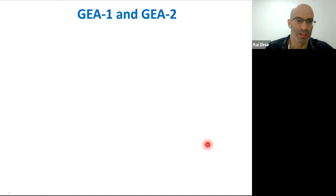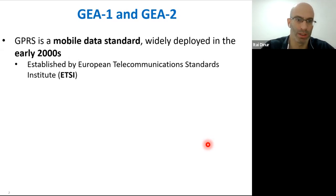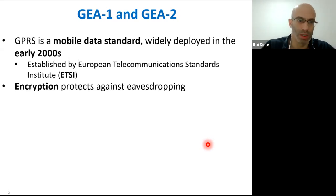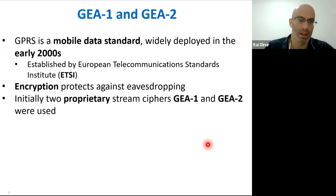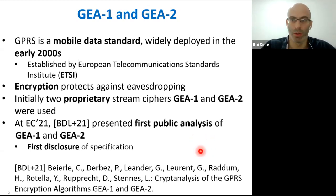This talk is about the GEA1 and GEA2 ciphers used in GPRS. GPRS is a mobile data standard that was widely deployed in the early 2000s to encrypt data and protect against eavesdropping on communications. Initially, GPRS used two proprietary stream ciphers named GEA1 and GEA2.